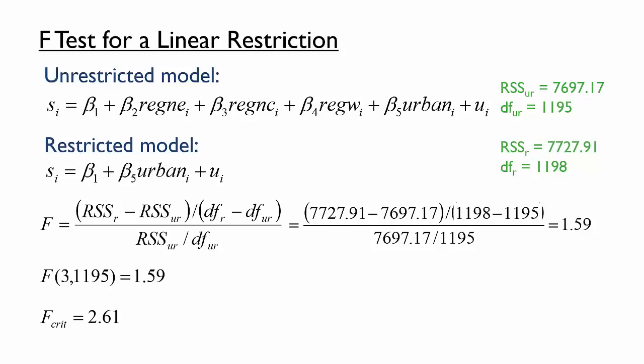Let's take a moment to revisit the intuition behind the F-statistic. We calculated a relatively small F-statistic, which is primarily due to the fact that RSS decreased only slightly from the restricted to the unrestricted model. Although the RSS should never increase when moving to a less restrictive model, the decrease in RSS — that is, the decrease in the sum of squared errors of the model's predictions — was sufficiently minor that we think the restriction could plausibly be true. The data we observed appear consistent with the restricted model, which assumes that the coefficients on the three region dummy variables equal zero. By contrast, if we had calculated a very high F-statistic, a large decrease in RSS would have indicated that the restriction was implausible.